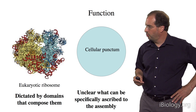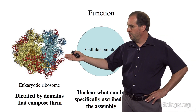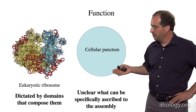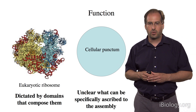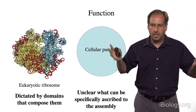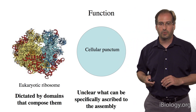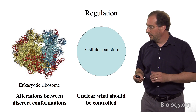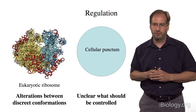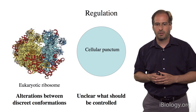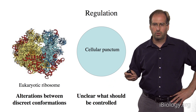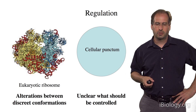One of the most important issues is function. We know that macromolecular machines function according to the domains that compose them, whereas it's really unclear in these cellular structures what functionality can be specifically ascribed to the assembly itself — distinct from the function of the individual proteins within them. What does it mean to organize them into a much larger structure? We simply don't know. Regarding regulation, macromolecular machines are regulated by alterations between discrete configurations, but because we don't understand the functions of these cellular structures, it's unclear what should be controlled to understand how function is altered by cellular processes.